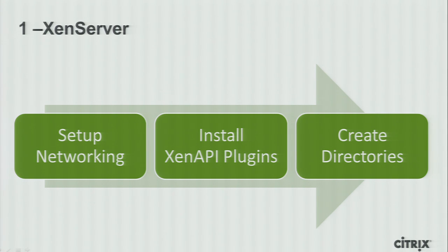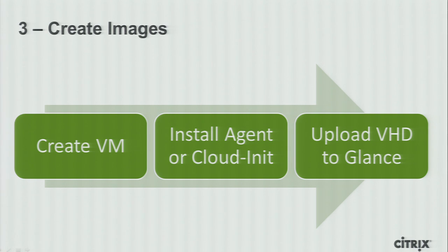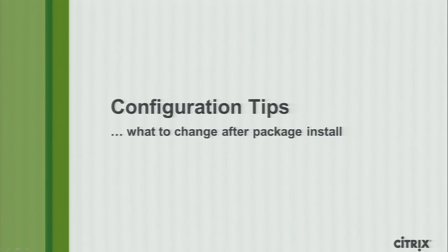The next step is the DOM-U. You install a paravirtualized VM - a standard virtual machine - and install and configure Nova Compute. Creating images is very similar to everything else. If you create the VM in XenServer, you install the agent, prepare it the way you want, and then the two things mostly supported are uploading VHD files - it's a gzip VHD file up to Glance - and they also support RAW. These things are covered in the manuals. If they're unclear, do ask - we're trying our best to update this stuff and make it really easy to use.